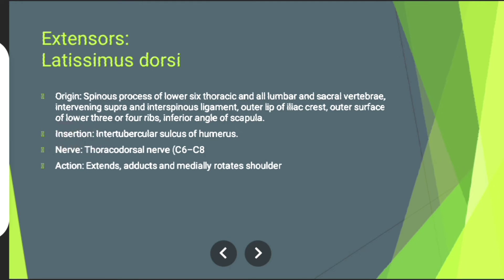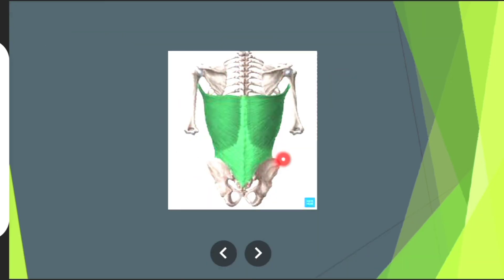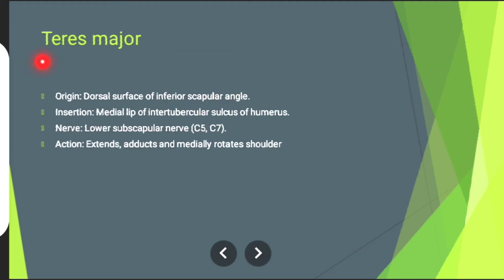Insertion: intertubercular sulcus of humerus. Nerve supply: thoracodorsal nerve. Action: involving extension, adduction, and medial rotation of shoulder. The muscle in green is latissimus dorsi muscle.